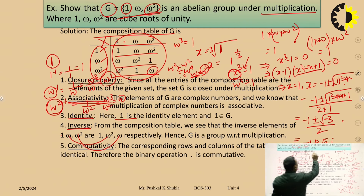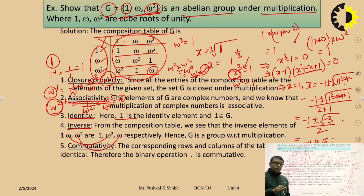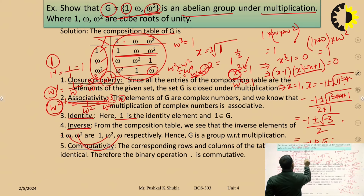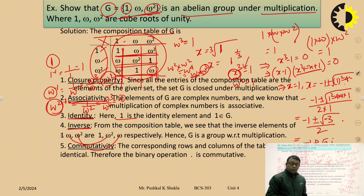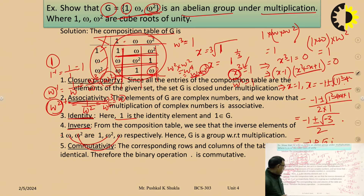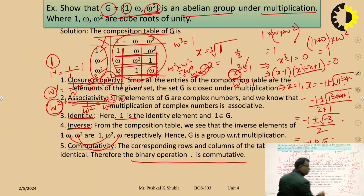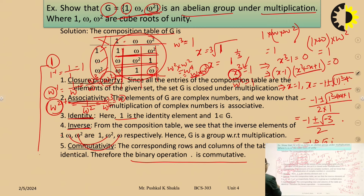Since all four properties hold, this forms a group. For abelian group, we also show the commutative property: the fifth property. If the entries on corresponding rows and corresponding columns in the composition table are the same, then it follows the commutative law. Here, the corresponding rows and columns are the same, so the binary operation is commutative. Since all five properties hold, this is an abelian group under multiplication.